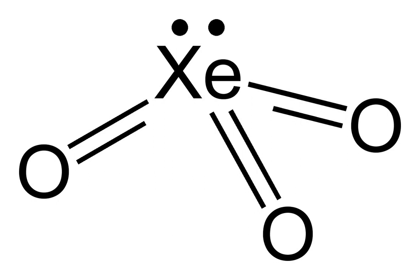Xenon trioxide is an unstable compound of xenon in its +6 oxidation state. It is a very powerful oxidizing agent and liberates oxygen from water slowly, accelerated by exposure to sunlight.